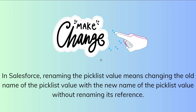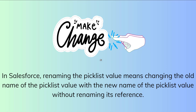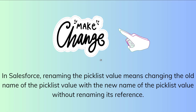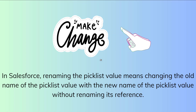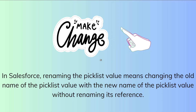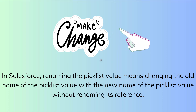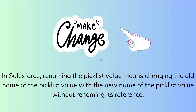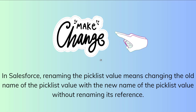It also helps the user to choose the right value from the picklist by altering the display label. Note that there is a difference between renaming and replacing a value. If you want to learn how to replace a picklist value in Salesforce, we already have a video for that — you will find the link in the description box.